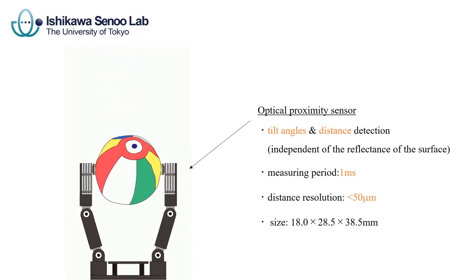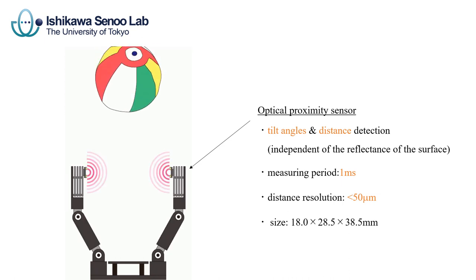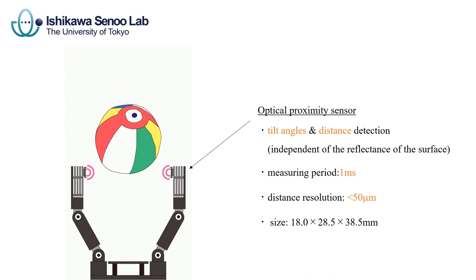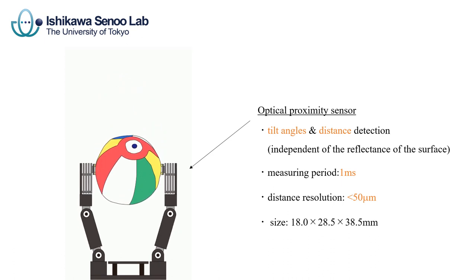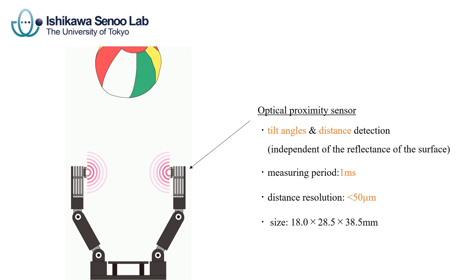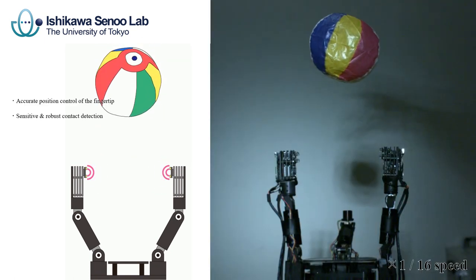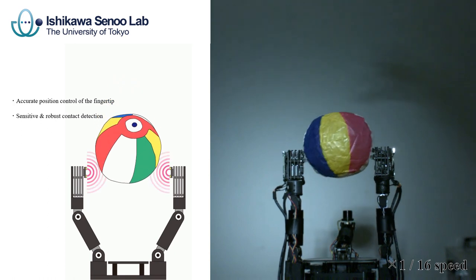We developed a fingertip-sized high-performance proximity sensor. The sensor detects tilt angles and the distance to an object surface within one millisecond with a distance resolution of 50 micrometers. By the sensor feedback, the high-speed robot hand adjusts fingertip position precisely.